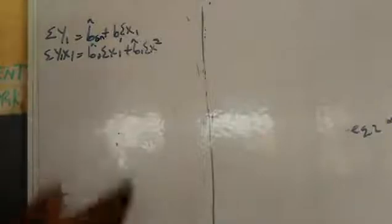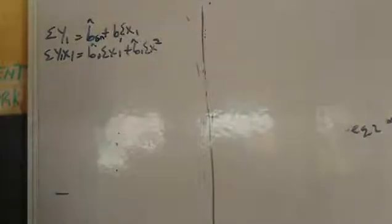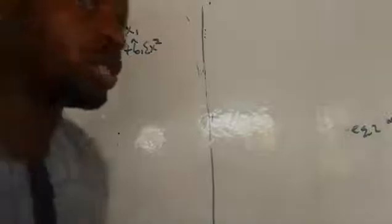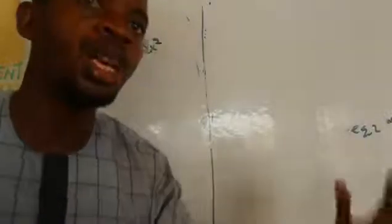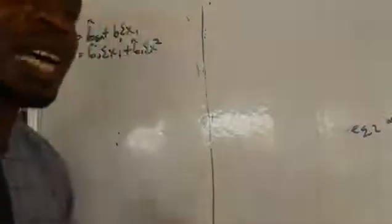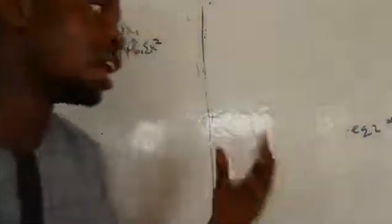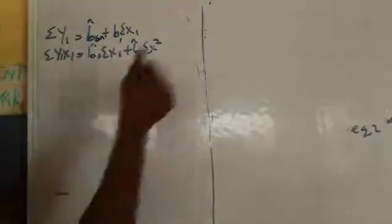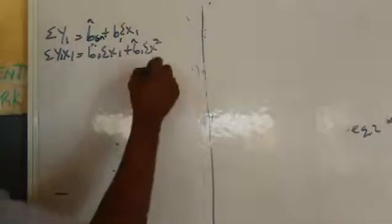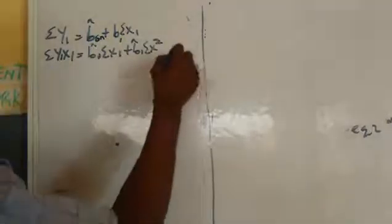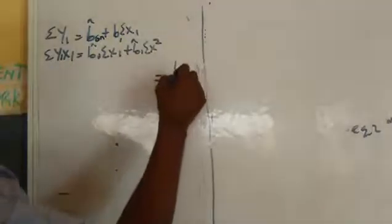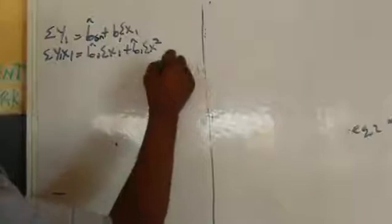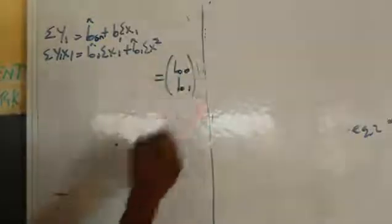What we simply do is introduce Cramer's rule. And when we introduce Cramer's rule, we get our b0 and b1. The objective is to get b0 and b1, and this is what we want to get.